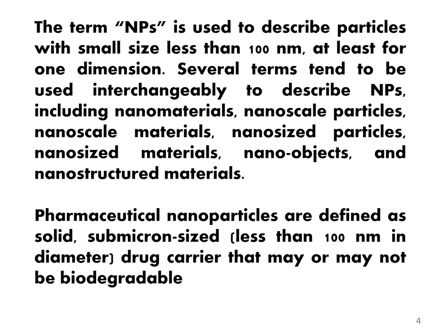Continuing with our session on the definition of nanoparticles, there are two more definitions which will help you understand this terminology better. When we have a particle in front of us that is uneven in size and shape, how do we determine whether it is a nanoparticle? For this purpose, there is a definition which says the term 'nanoparticle' is used to describe particles with a size less than 100 nanometers in at least one dimension. So if one of the dimensions of a multi-dimensional non-uniform structure is less than 100 nanometers, that particle can be termed a nanoparticle.